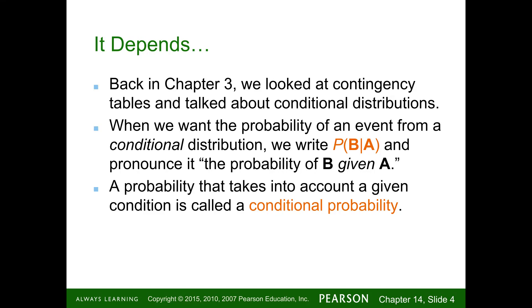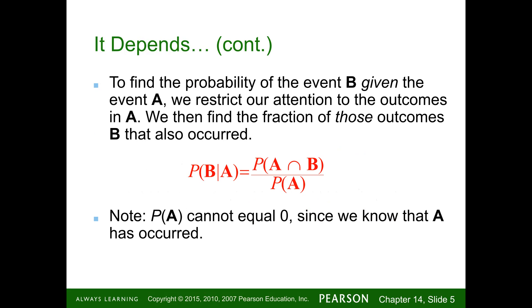We've done a couple of those already. To find the probability of B given the event A, we restrict our attention to the outcomes in A and then find the fraction of those outcomes where B also occurs. The formula is the probability of A and B divided by the probability of A — just plug the values into the equation.